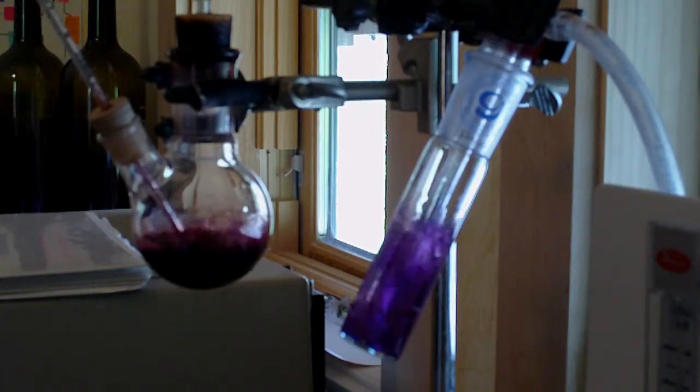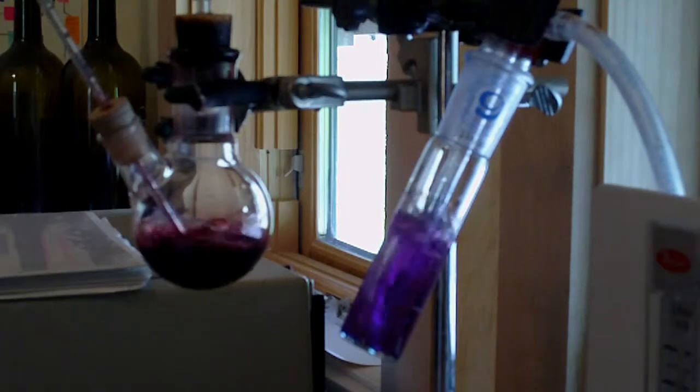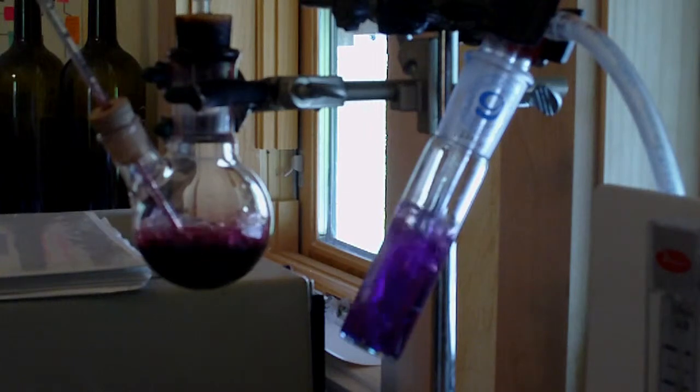Because that sulfur traps the oxygen and the bacteria feeds, metabolizes off that oxygen. So the trick is to have a little bit of sulfur present during the aging of the wine, but then by the time it's bottled, you want it to all use that.